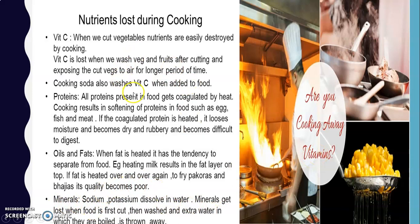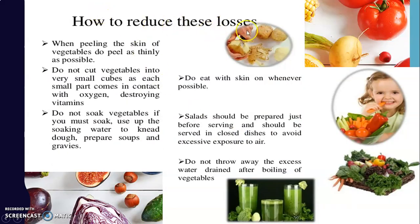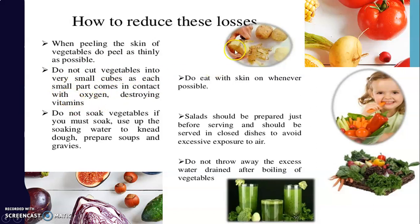To reduce nutrient losses, when peeling the skin of vegetables, peel as thinly as possible. Do not cut vegetables into very small cubes, as each small part comes in contact with oxygen which destroys vitamins. Do not keep cut vegetables in the air for a longer time so they do not come in contact with oxygen.